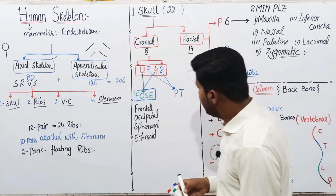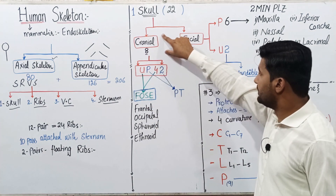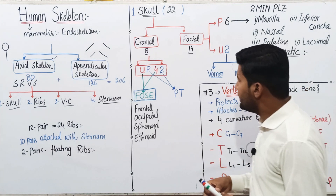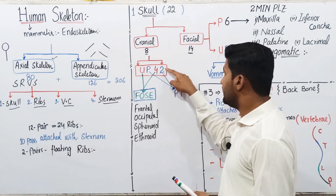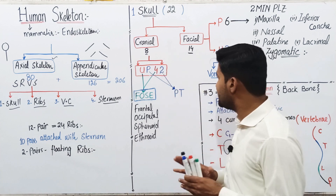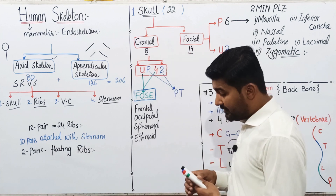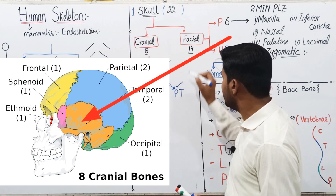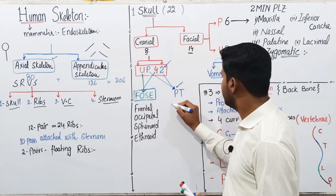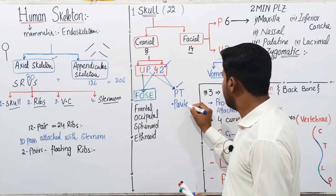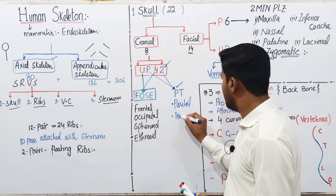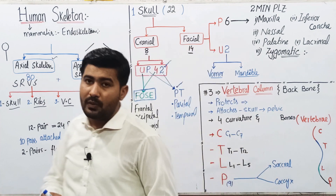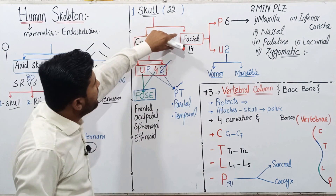So the four unpaired cranial bones are frontal, occipital, sphenoid, and ethmoid — remembered by FOSE. The paired cranial bones: there are two paired bones in the cranium — P for parietal and T for temporal. So parietal and temporal are the two paired bones present in the cranium.